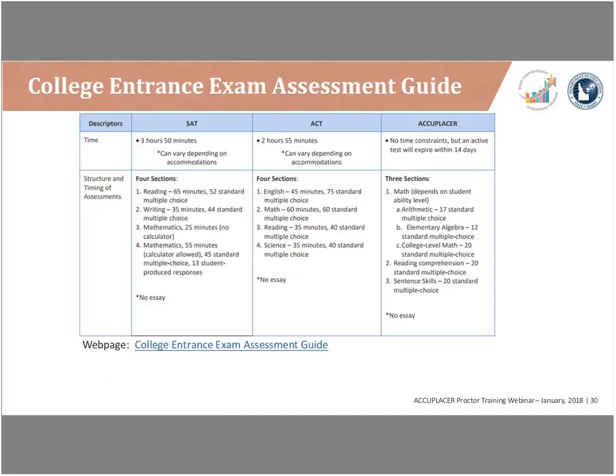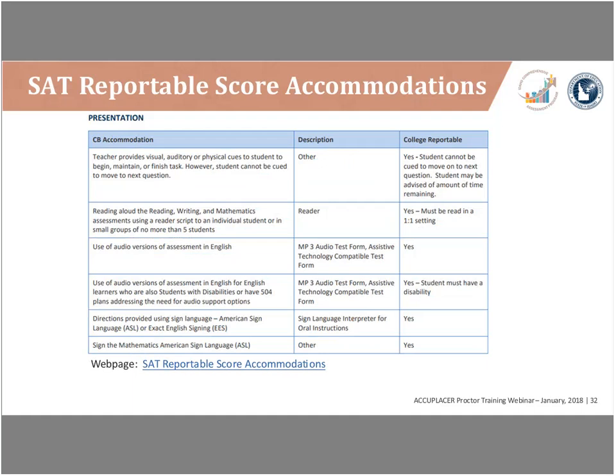Three resources are available to help IEP teams make decisions. The first is the College Entrance Exam Assessment Guide, which compares the SAT, ACT, and Accuplacer on time constraints, structure, timing, test setting, costs, common use, direct admissions, and scholarship opportunities. The second resource is SAT Reportable Score Accommodations — a comprehensive list of accommodations the College Board accepts for a student to receive a reportable SAT score. The third resource provides a list of accommodations available for the Accuplacer. All three are hyperlinked and available on the College Entrance Exam webpage.